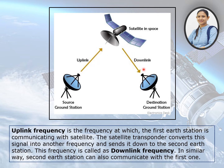And the frequency with which the signal is sent by the satellite back to the Earth is called downlink frequency. These two frequencies are different from each other.